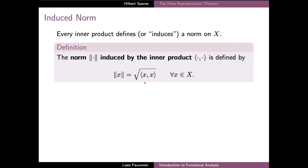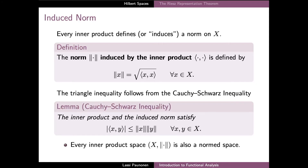This expression is well defined since the first axiom of the inner product required that the inner product of x with itself is always a non-negative real number. Otherwise, it is quite straightforward to show that the induced norm is indeed a norm in the sense that it satisfies the required axioms. But the triangle inequality is based on an intermediate result, which is also an incredibly useful tool by itself in analysis.